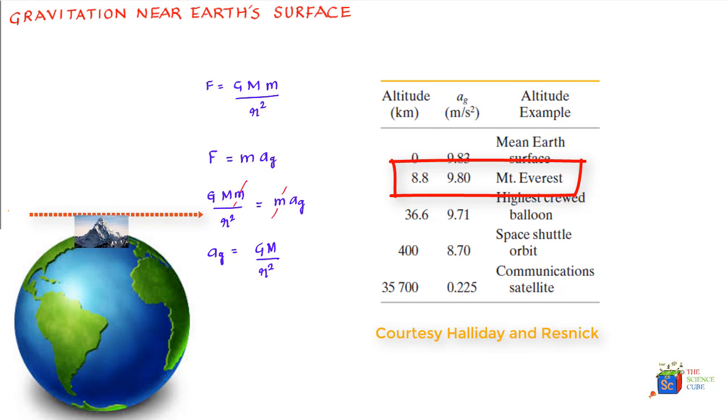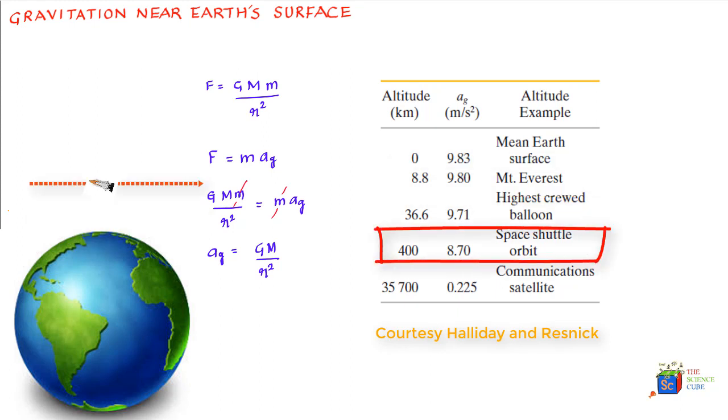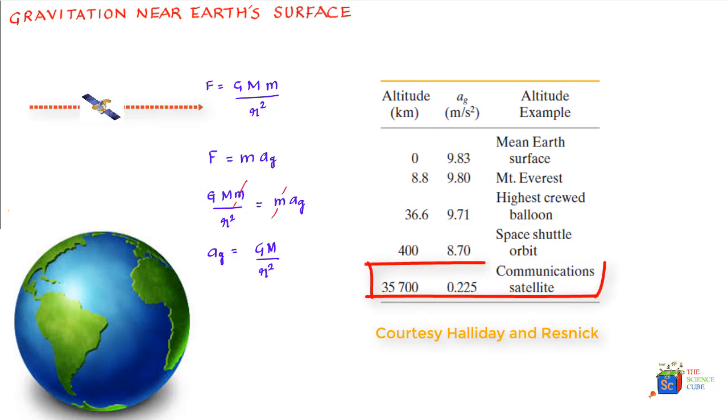If you climb up further, let's say you reach the space shuttle in an orbit which is 400 kilometers up, the g value changes to 8.7 meters per second squared. And if you get into a communication satellite which is 35,700 kilometers above the Earth, the ag value decreases significantly to 0.225 meters per second squared.